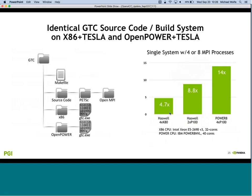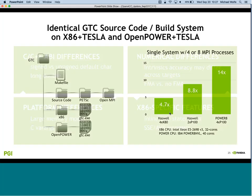Here's a case where we took the gyrokinetic toroidal code GTC, with all source code in one directory and two build directories, using the exact same makefiles to compile for x86 plus Tesla and Power plus Tesla. Running four MPI processes on different system configurations, we see speedups over a single Haswell core.